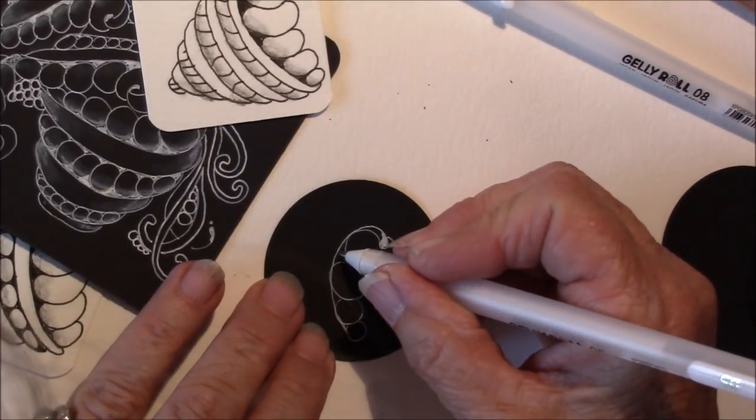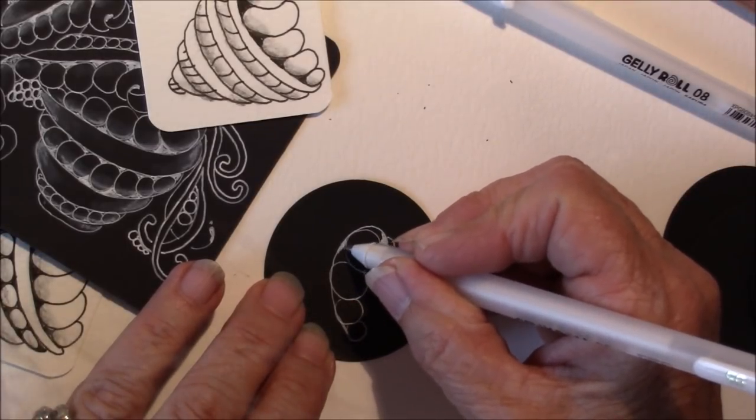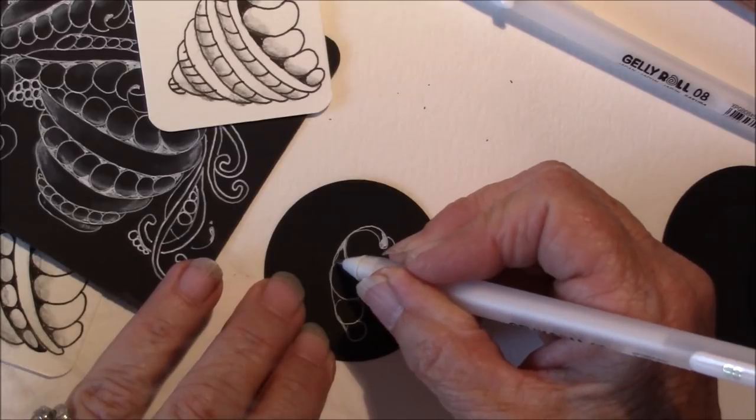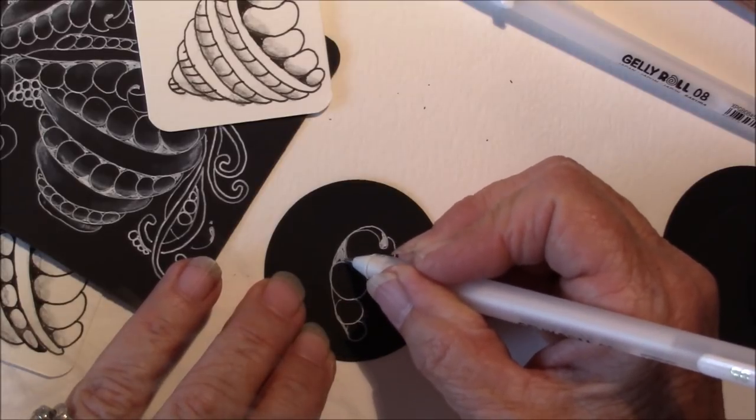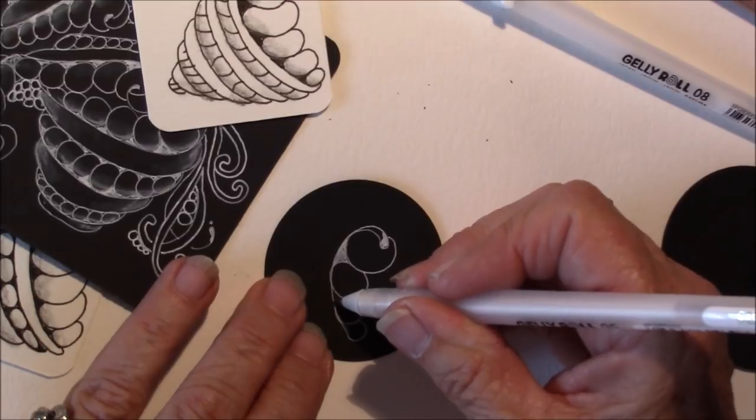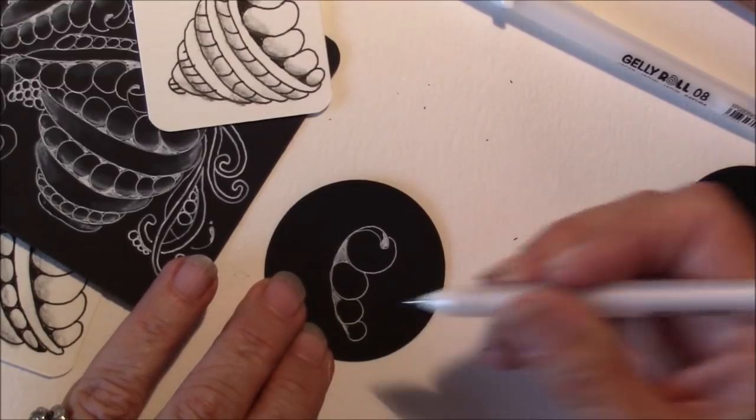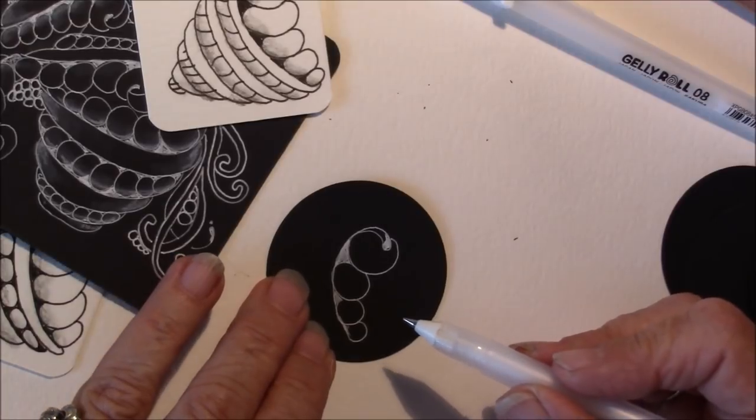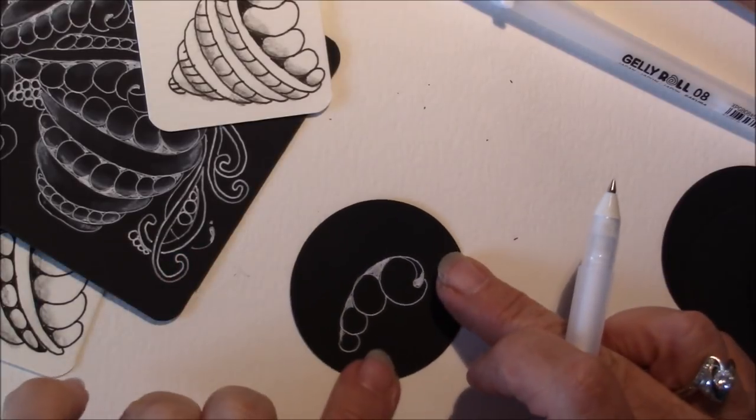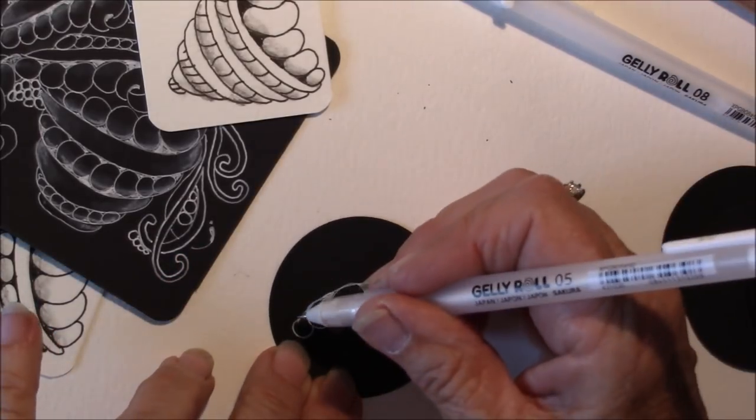Now, I could just fill this in with my 05 right in here, whiten that in. I almost said blacken it in, but we don't blacken if we're doing on white. Or you could change and use your 08 if you've got that.